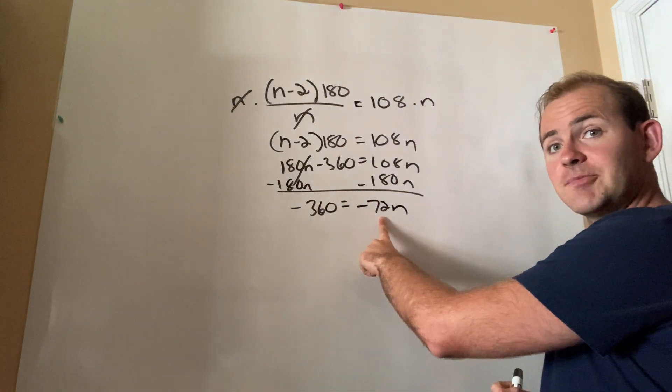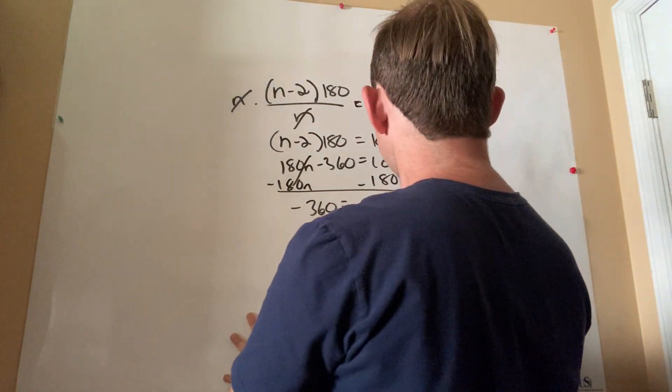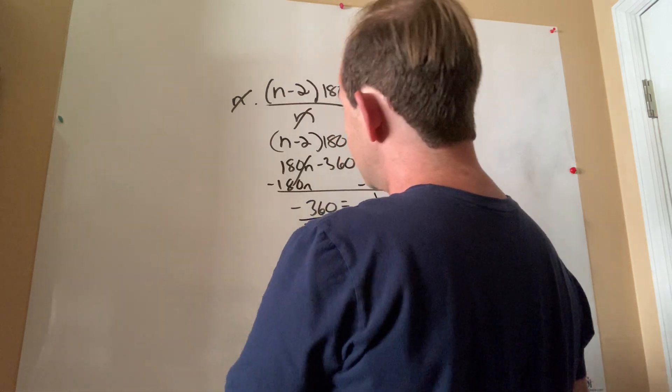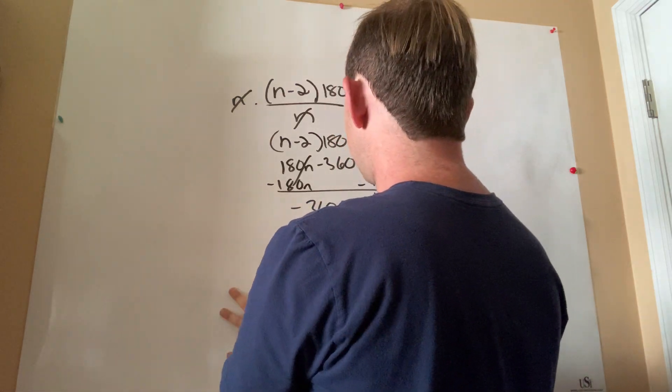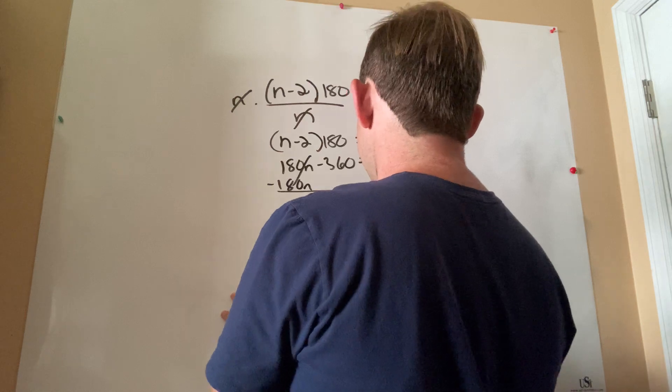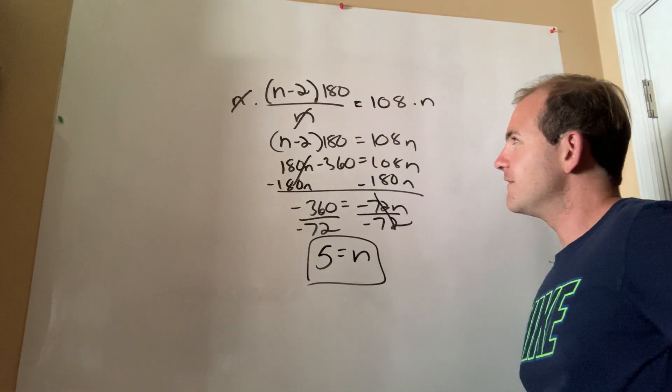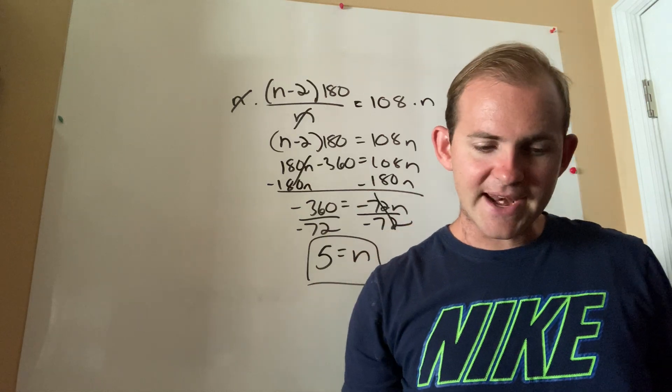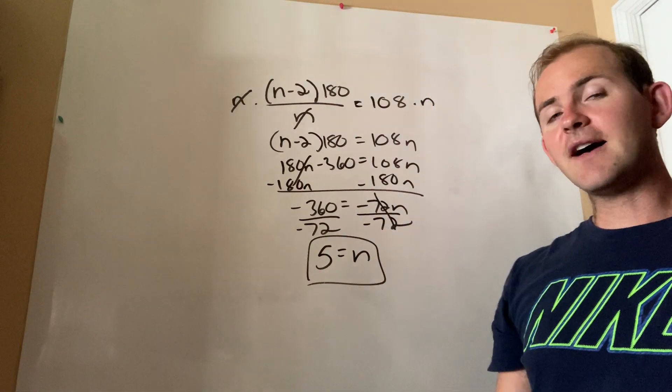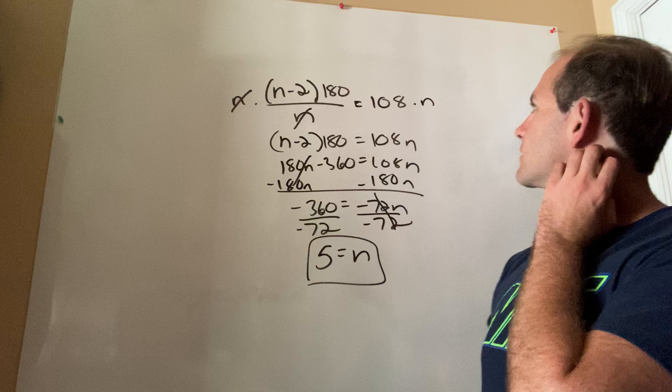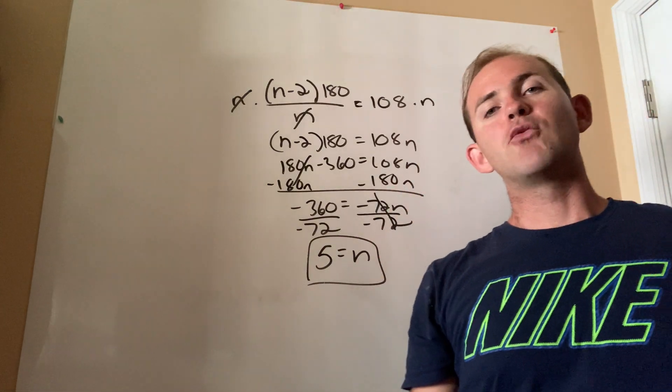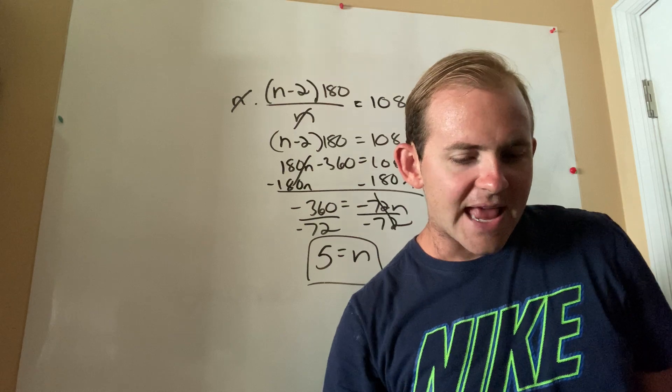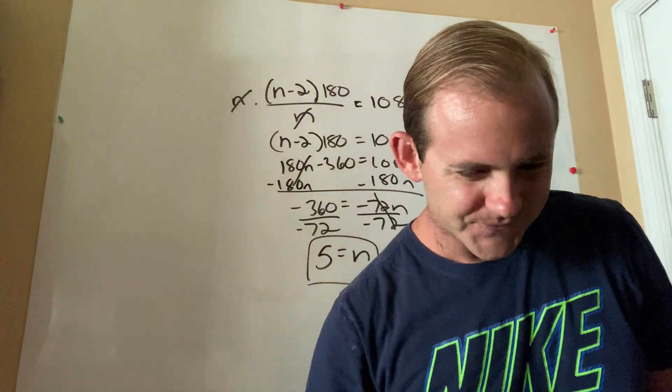How do I get rid of a multiplied negative 72? I would divide both sides through by negative 72. And believe it or not, this is going to be positive five. So all of that hot mess was just to show us that a regular pentagon with five sides would be what I would have here. In other words, a regular pentagon has an interior angle that measures 108 degrees.